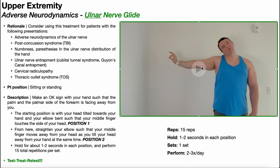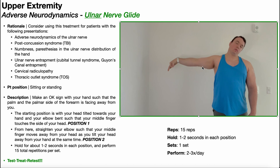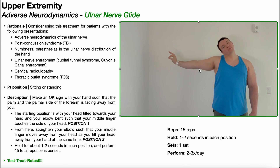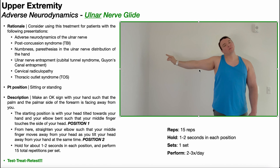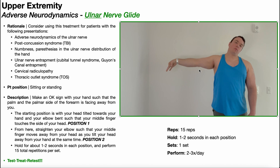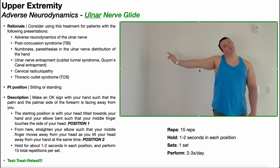Let's go to position two: flex the wrist and tilt the head away from the hand. This is position two — no movement is occurring at the elbow. Oscillate between these two positions, holding about one to two seconds in each position, for about 15 total repetitions per set.